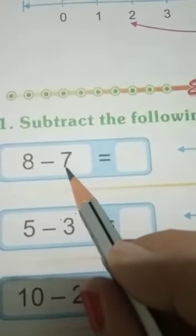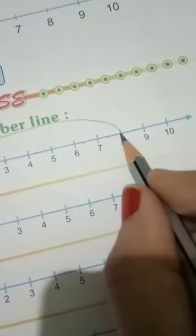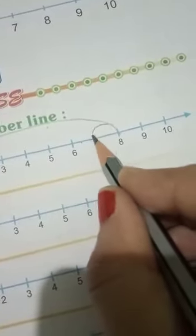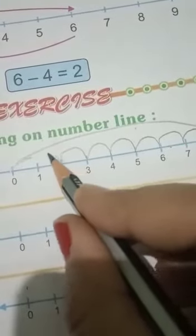Next step, what do you have to do? 7 steps back. 1, 2, 3, 4, 5, 6, 7.